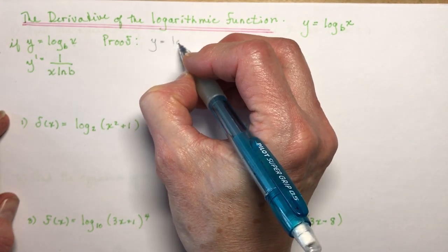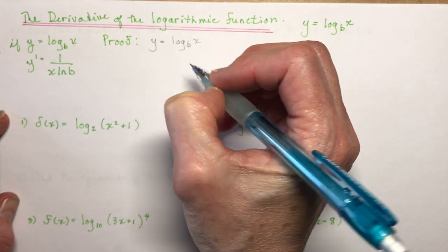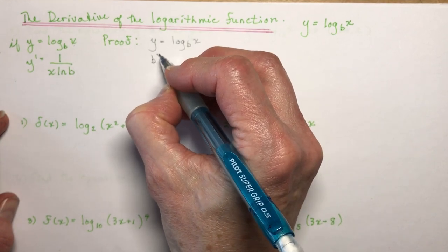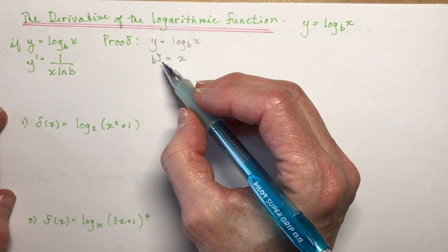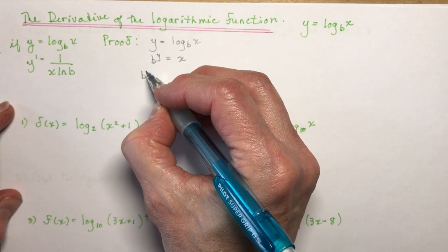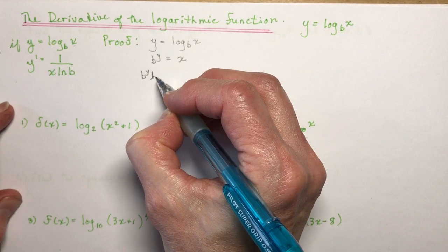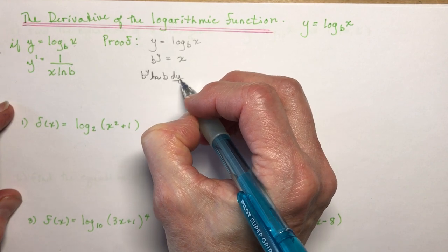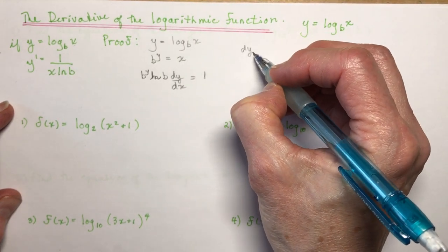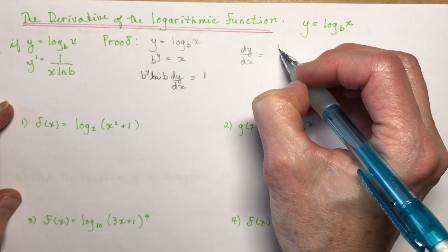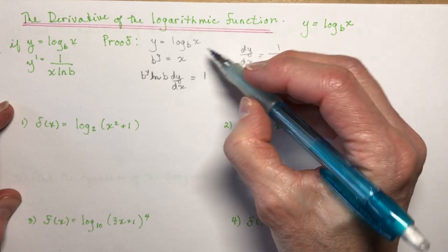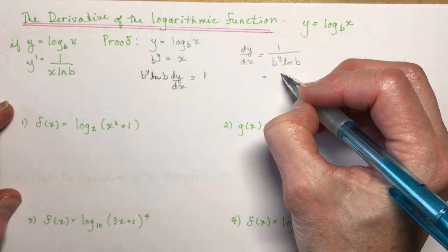If we have y equals log base b of x, and we write this in exponential form, we get b to the y equals x. Now using implicit differentiation, the derivative of b to the y is b to the y·ln b times dy/dx, and the derivative of x is 1. So dy/dx equals 1 divided by b to the y·ln b. But b to the y is x, so that's 1 over x·ln b.